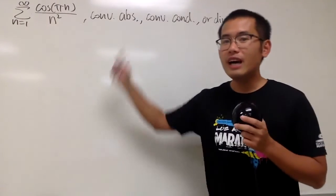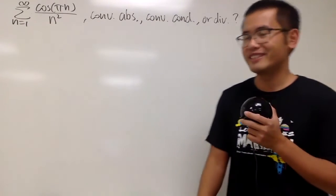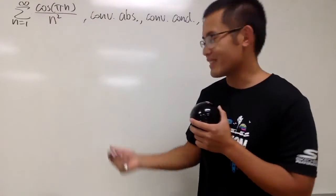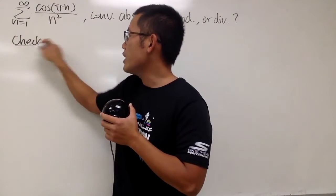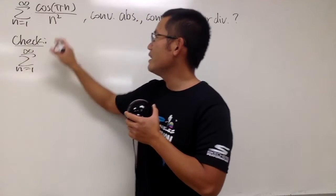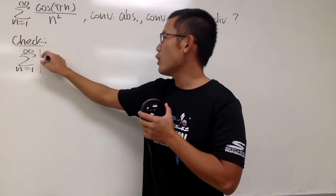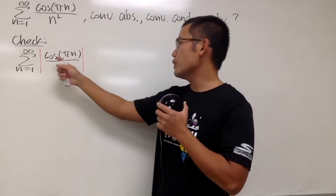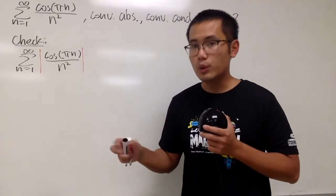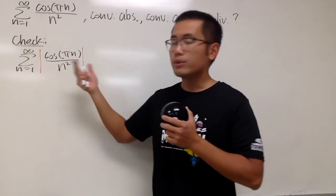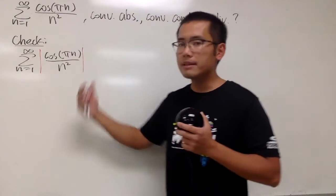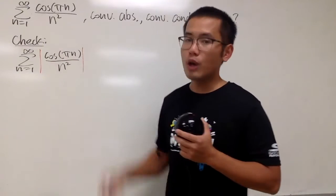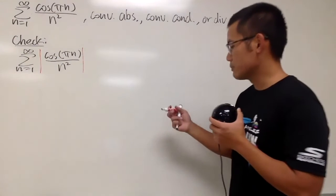We'll see if this next series converges absolutely or conditionally, or maybe it diverges. When checking for absolute convergence, we first check the absolute value version: the sum as n goes from 1 to infinity of |cos(nπ)/n²|. Now, cos(nπ) alternates between -1 and 1, but it doesn't really matter here. The key note is that |cos(θ)| ≤ 1 for any angle θ, because that's the range of cosine.